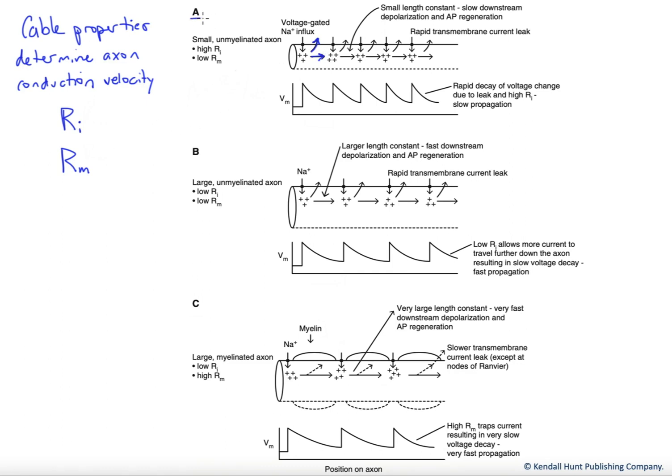Now, if we look in A, we see that a small axon has relatively high internal resistance. This has to do with fewer ions being available to convey that electrotonic current down the cytoplasm. Resistance to the membrane is relatively low, which means we have a great deal of leak of current out of the cell.